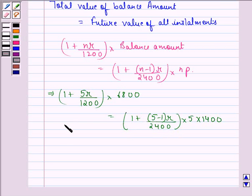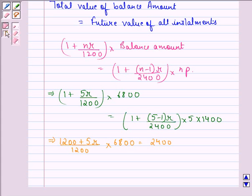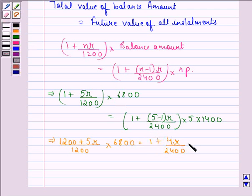This implies (1200 + 5R)/1200 times 6800 equals (1 + 4R/2400) times 7000, or equivalently, (2400 + 4R)/2400 times 7000.